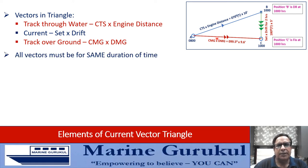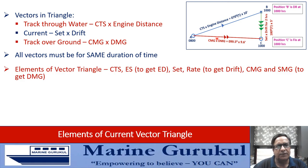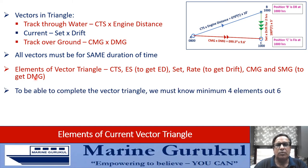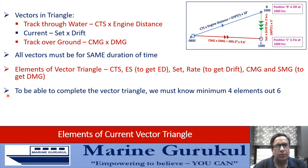It is imperative that in the vector triangle every vector must be for the same duration. Since there are three vectors, each with a direction and magnitude, there are six elements: course to steer and engine speed (giving engine distance), set and rate of current (giving drift), and CMG and SMG (giving DMG). To complete the vector triangle, you need a minimum of four elements out of six. Missing two elements can then be read off from the completed triangle.